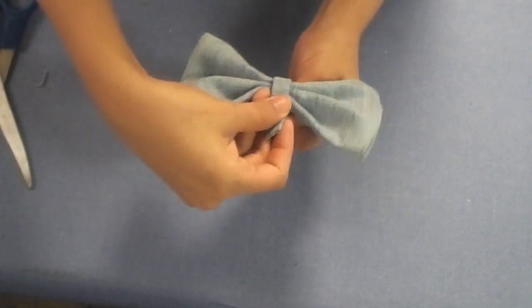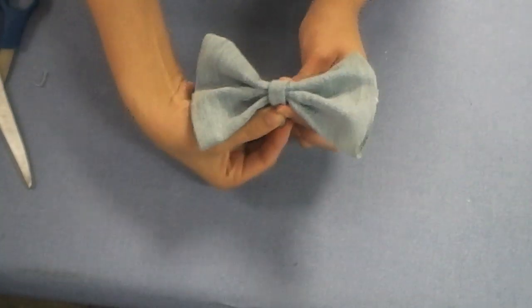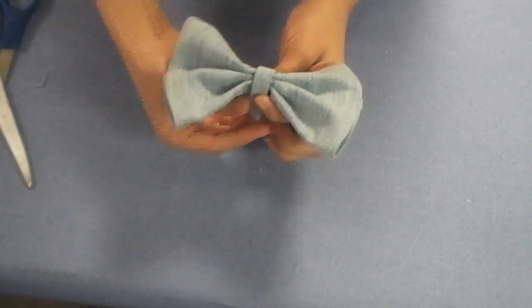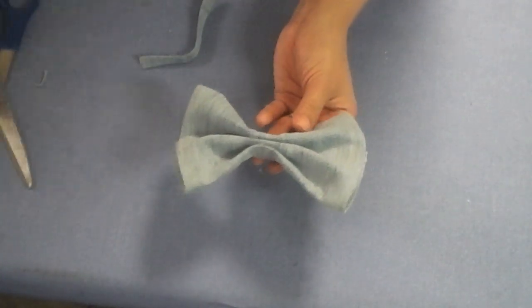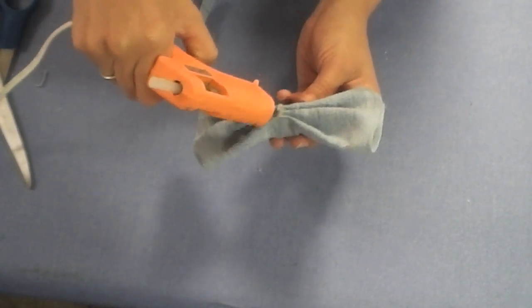And then after that's done you're just going to want to place it on your bow to see where you want it and then once you find where you want it just put the glue on the top of the bow and then finish gluing the sides.